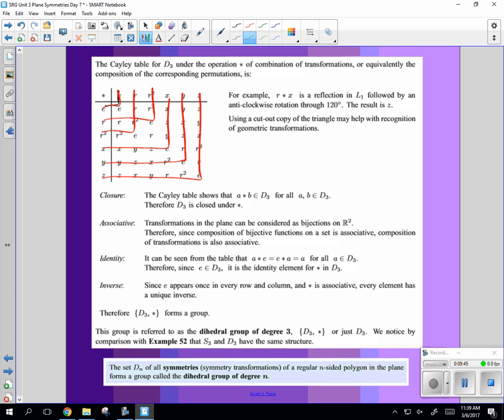Good. So since we have closure, associativity, identity, inverse, D3 is a group. Taking a look at this, do you think it's going to be abelian? Right there. Not abelian. Right? Nope. Not going to make it.